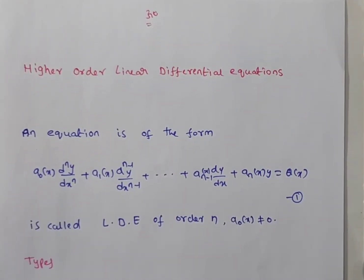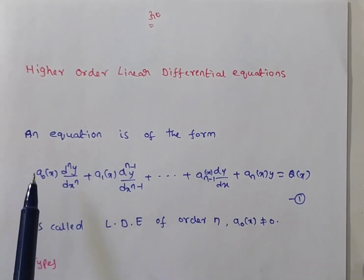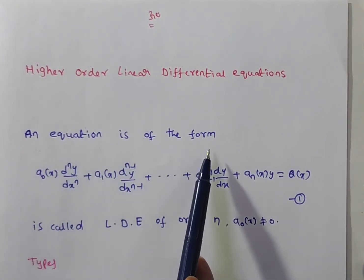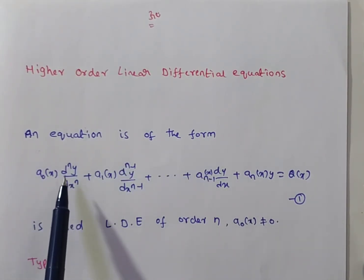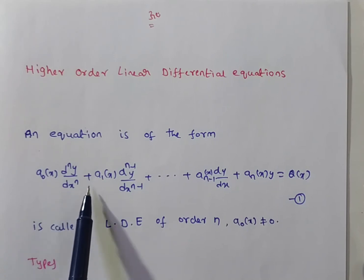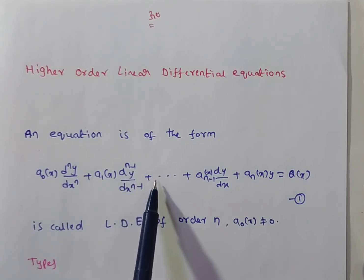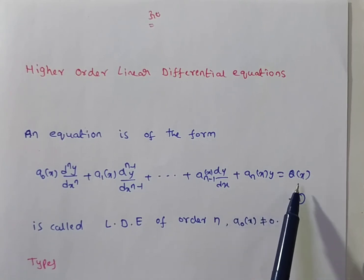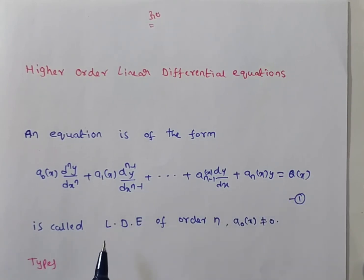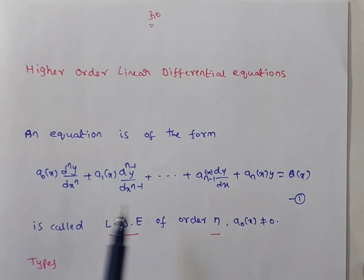Hi friends, now we are discussing a review of higher-order linear differential equations. An equation of the form a₀(x) dⁿy/dxⁿ + a₁(x) dⁿ⁻¹y/dxⁿ⁻¹ + … + aₙ(x)y = q(x) is called a linear differential equation of order n, where a₀(x) ≠ 0.